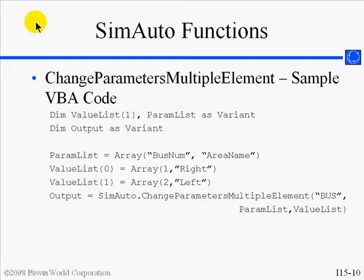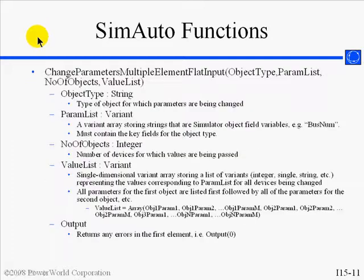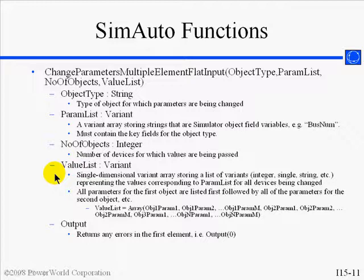Another related function is change parameters multiple element flat input. Here, the difference is that the value list is a single dimensional variant array, where all the parameters for all of the objects are listed sequentially in one array, instead of separately in an array of arrays.